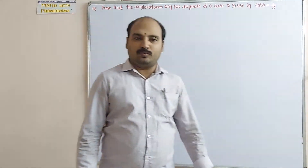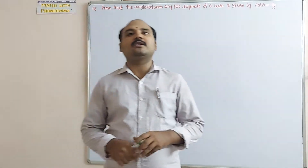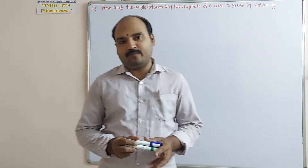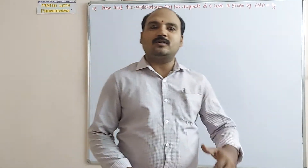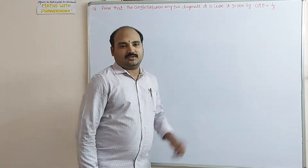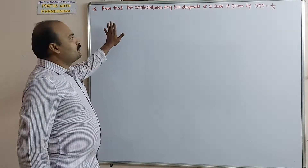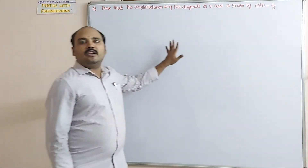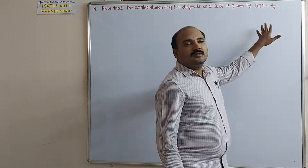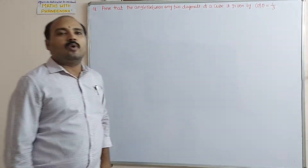Any two diagonals of a cube in the vectors. This is also in Mathematics 1B in direction cosines and direction ratios, and we can use this answer in that chapter as well. By using vectors, we are going to show that the angle between any two diagonals of a cube is theta equal to cos inverse of 1 by 3, or cos theta equal to 1 by 3.